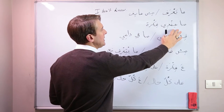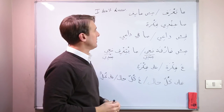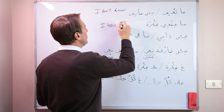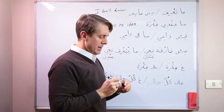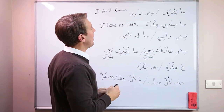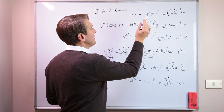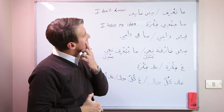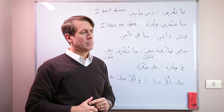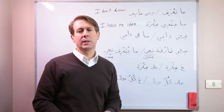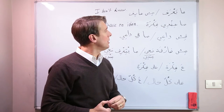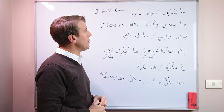The next one is 'ma'andi fikra' — it means 'I have no idea.' You're strengthening what you're saying: not only do you not know, you have absolutely no idea. It can be used as a standalone response, just like 'ma ba'araf.' If somebody asks you where a hotel is, you can say 'ma'andi fikra.' It can sound a little rude, just like in English, but it's commonly used for responses.